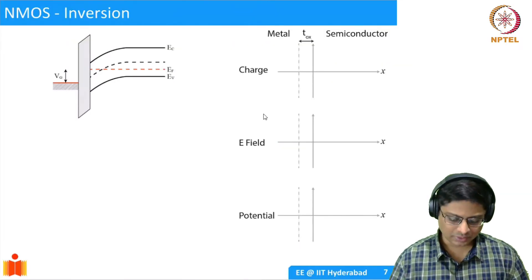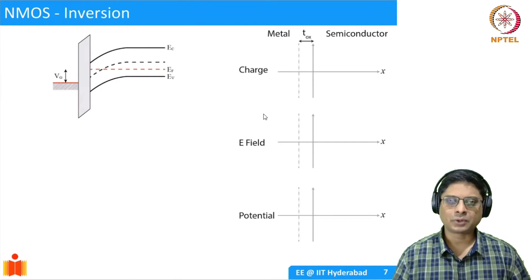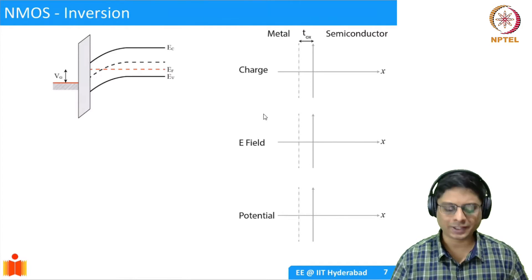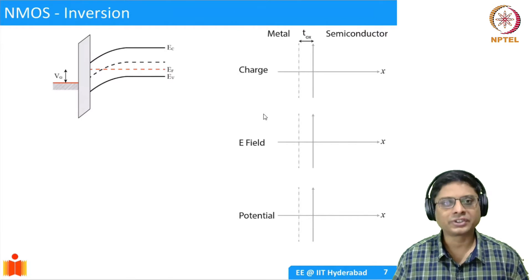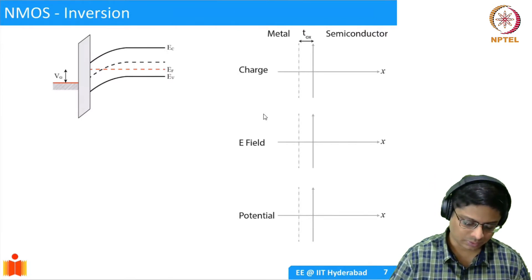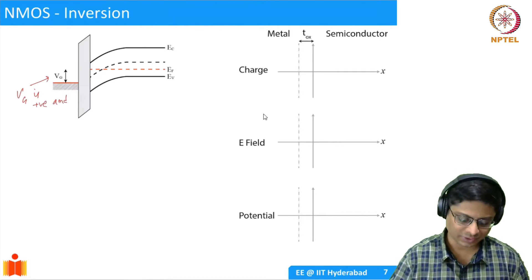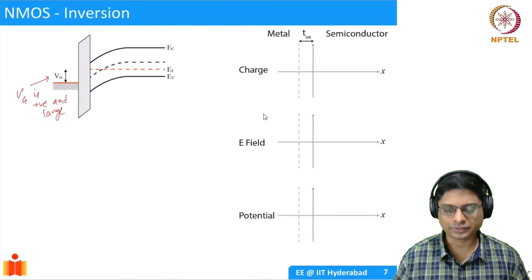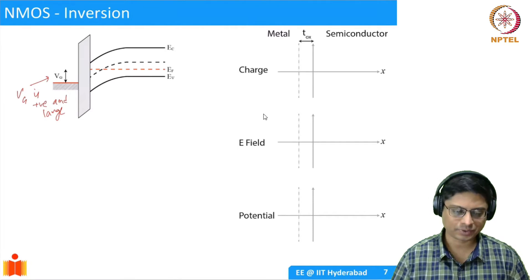Welcome back. Now we'd like to look at an NMOS device in inversion. I'm not going through the motions of drawing the band diagram — by now you should be familiar. Whenever we want to get inversion, we need to apply a positive gate voltage, so VG is positive and large. We are actually going beyond inversion, which we will discuss in a moment. Because of that, you first have depletion of the semiconductor and then inversion.